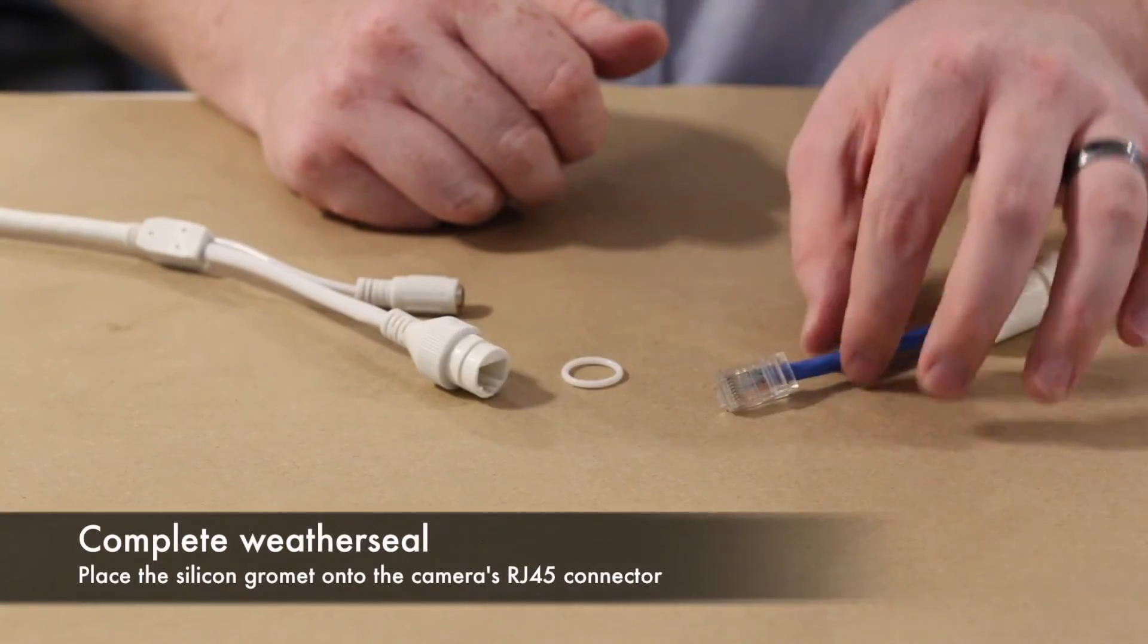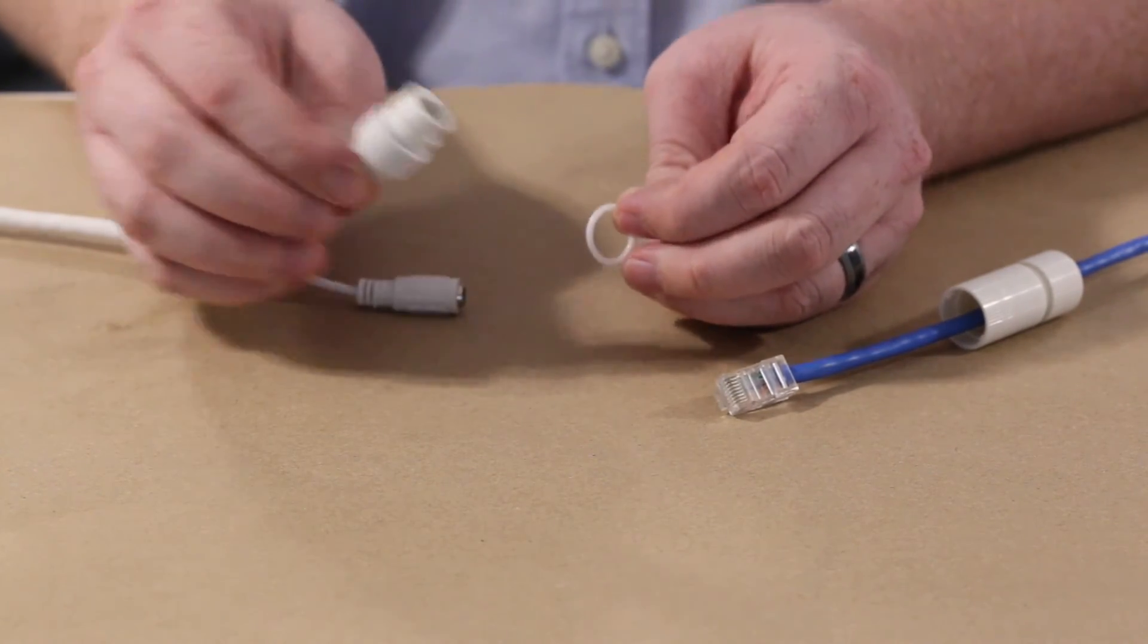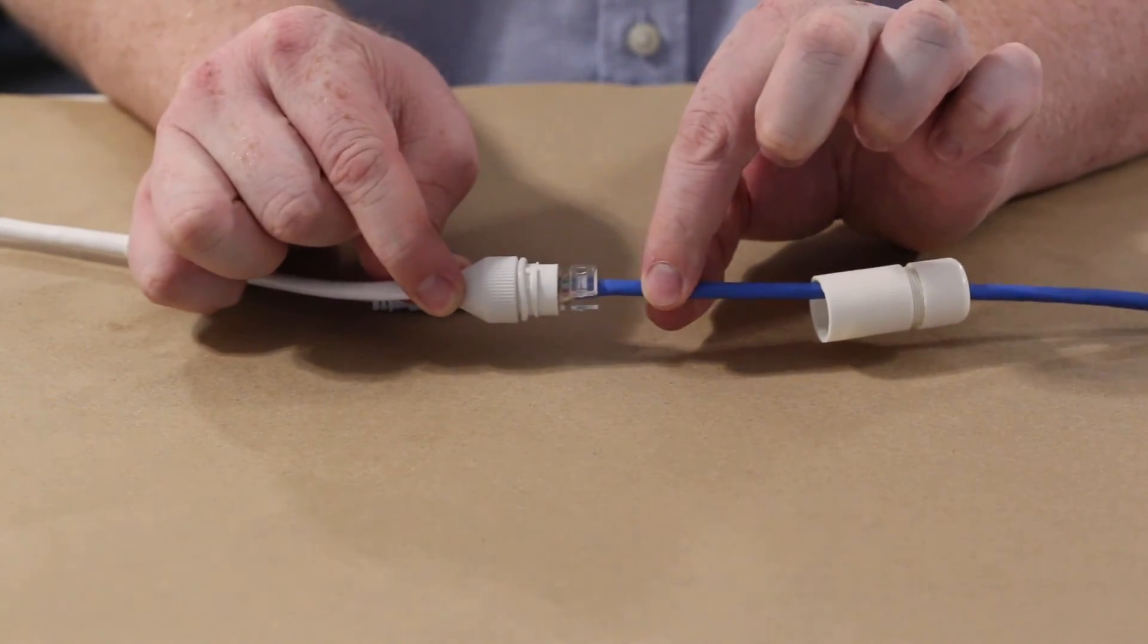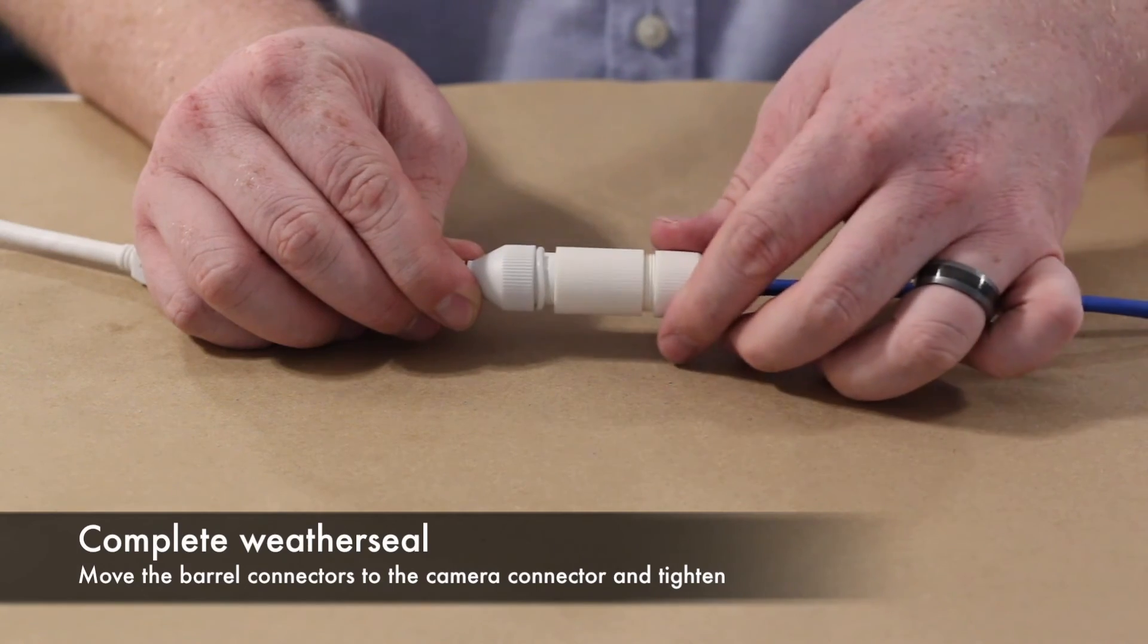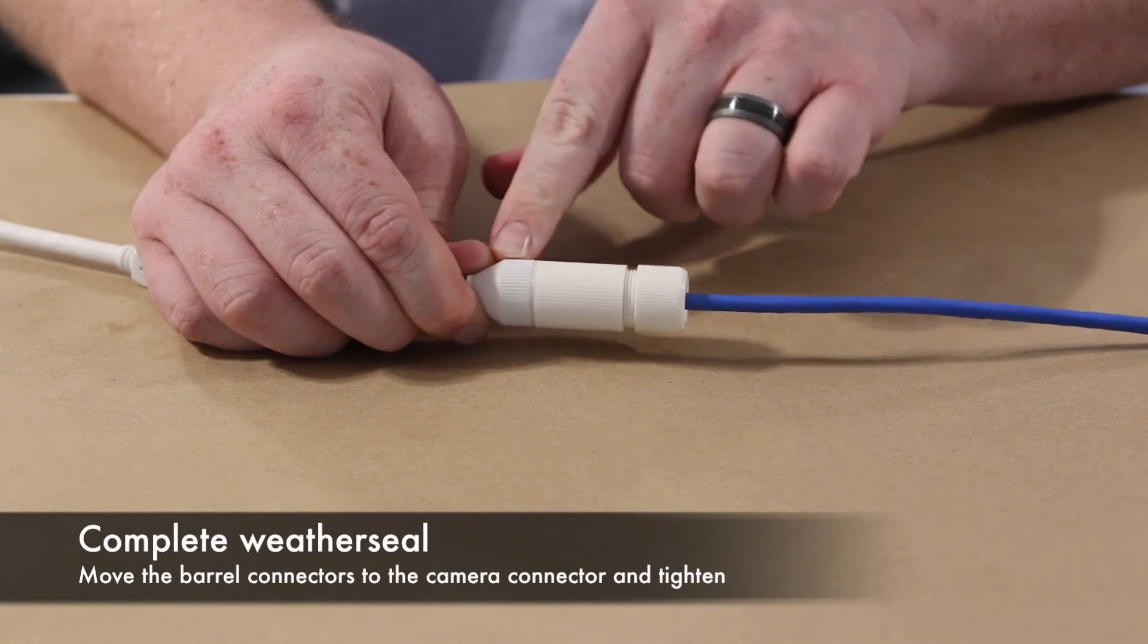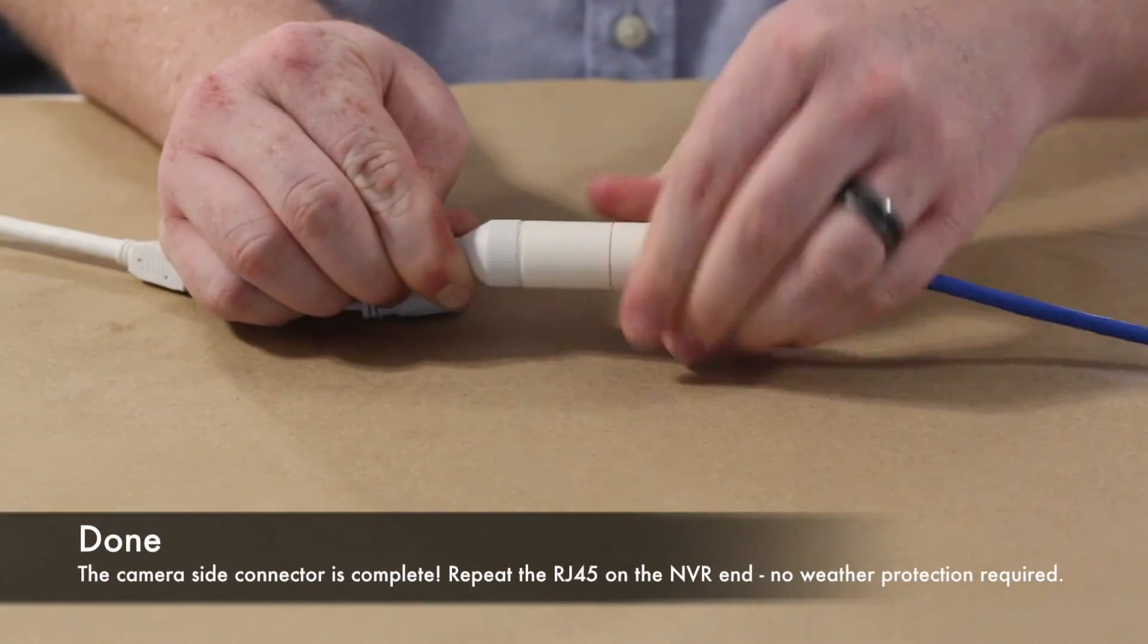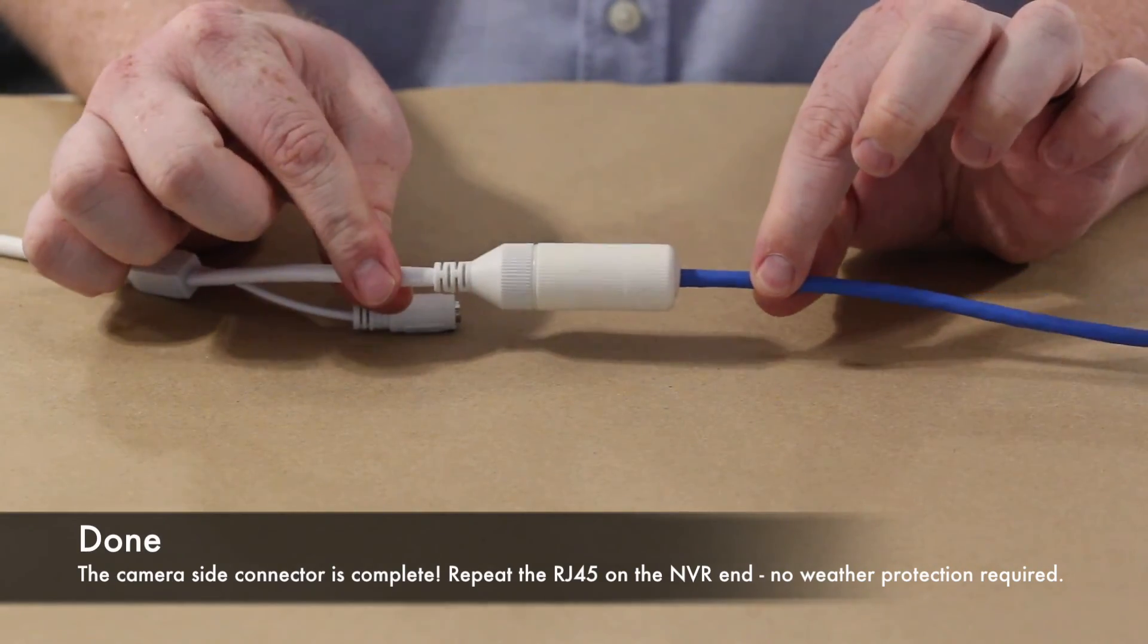Now that we have the RJ45 crimped we can use this silicone grommet on the camera's ethernet connector. We can now connect our cable. You want to hear a click to let you know that it's properly seated. Next we're going to use our weatherproof barrel connector which is a twist lock design to seal here and then we will tighten the end of the barrel connector here. We now have a secure weatherproof connection.